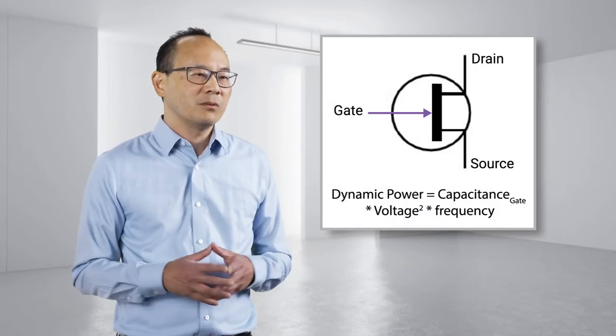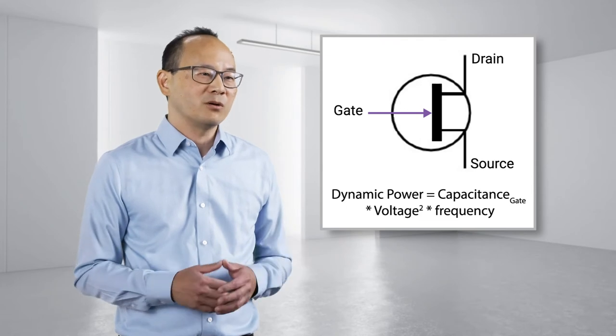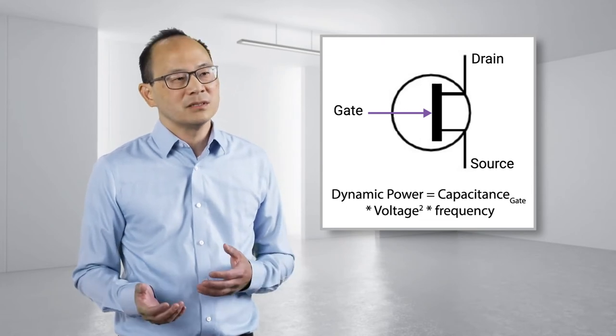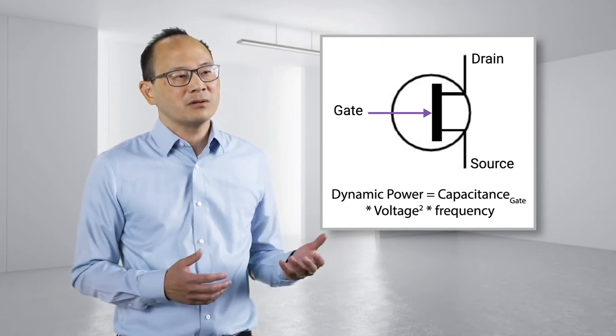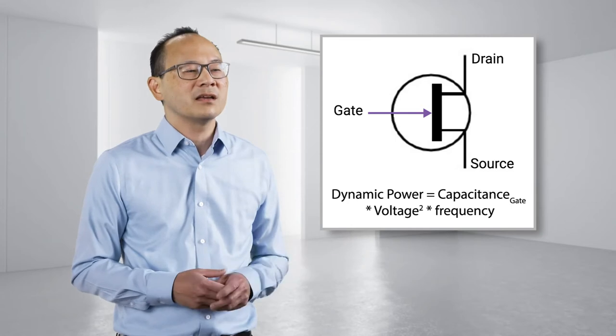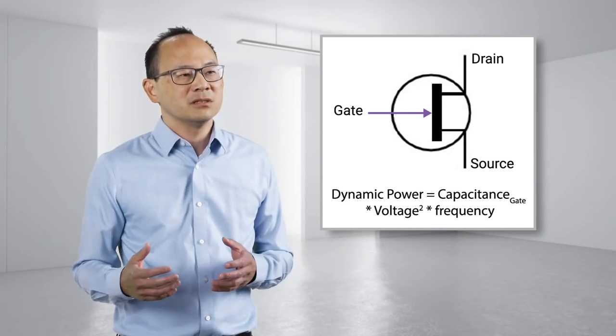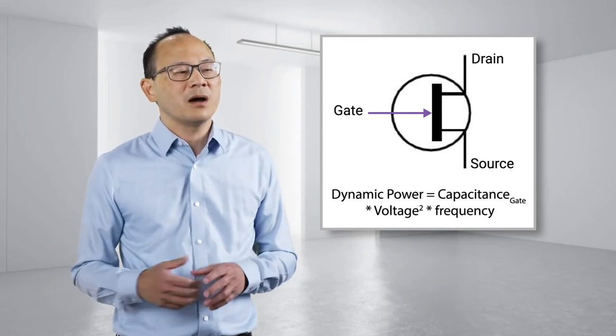Established dynamic power optimization techniques target the reduction of transistor sizes to reduce gate capacitances, to reduce wire capacitances themselves, or to use clock gating to disable portions of the designs that are not in use. However, when we look at the dynamic power equation, under the same frequency, dynamic power is proportional linearly to gate capacitance, but proportional to the square of the operating voltage.